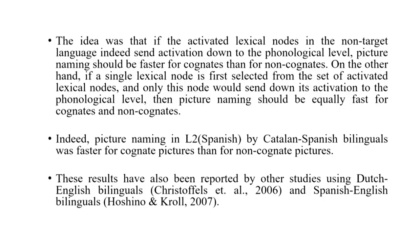The idea that Costa and colleagues were running with was that if the activated lexical nodes in the non-target language do indeed send activation down to the phonological level, picture naming should be faster for cognates. They share phonology, so there will be higher activation in those sublexical phonological components because they are receiving activation from both the target word and its translational equivalent. On the other hand, if a single lexical node is first selected and only that node sends activation down for phonological encoding, then picture naming would be equally fast for both cognates and non-cognates.